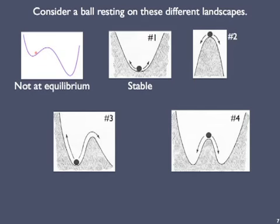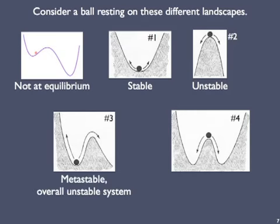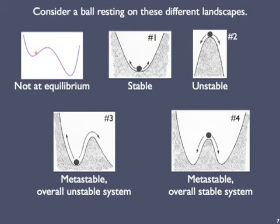Sketch number two is obviously an unstable configuration — it's nearly as precarious as the balanced pencil. Any slight disturbance will move the ball off the hill, and it won't return. Sketch number three is actually a metastable system — the ball will stay in its valley as long as the disturbance isn't too great, but if the shaking is strong enough, it'll hop out of that valley and won't return, so overall this system is unstable. Sketch number four also depicts a metastable situation, but overall the system is stable — the ball will end up in one of the two side valleys.